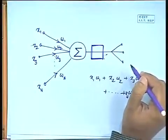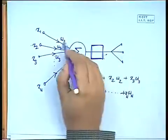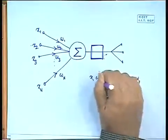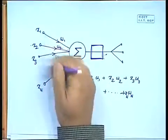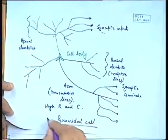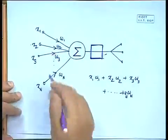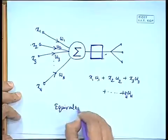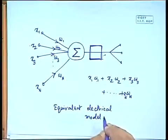If that output is different from what is desired, we simply change the connection strengths — change w1, w2, w3 up to wn — so that with the same set of inputs x1, x2 up to xn, we obtain an output close to the desired response. This is the biological model of a nerve cell with its inputs and outputs, and this is the equivalent electrical model. We will be considering such equivalent electrical models of artificial neurons in this course.